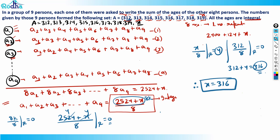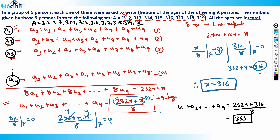Now computing the total sum of all nine ages: (2524 + 316) / 8 = 2840 / 8 = 355. So 355 is the sum of all nine ages.